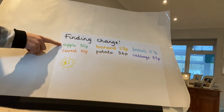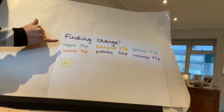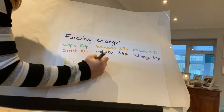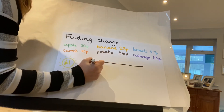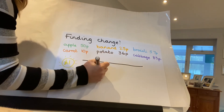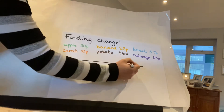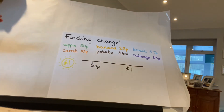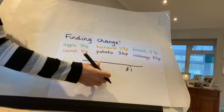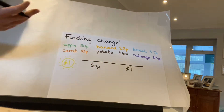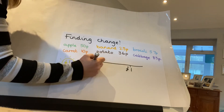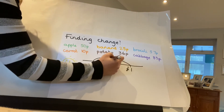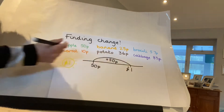Let's have a look at some of these items. If I went into the shop and bought an apple for 50 pence, however I only had a pound, I'm looking at how much more I need to get from my 50p to one pound or 100 pence. If I know that 50 add 50 makes 100, or one pound, I know I'm going to need 50p to get to my pound.